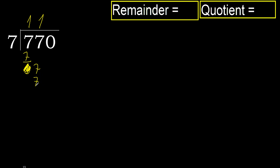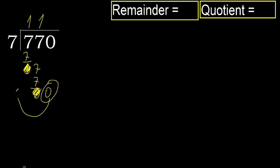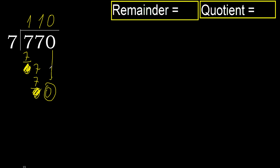Not greater, ok. Subtract. Next, bring down 0. 0 is less, therefore next — that is not a number, therefore finish it. Complete — always complete with 0, because here it finishes with this number. Ok.